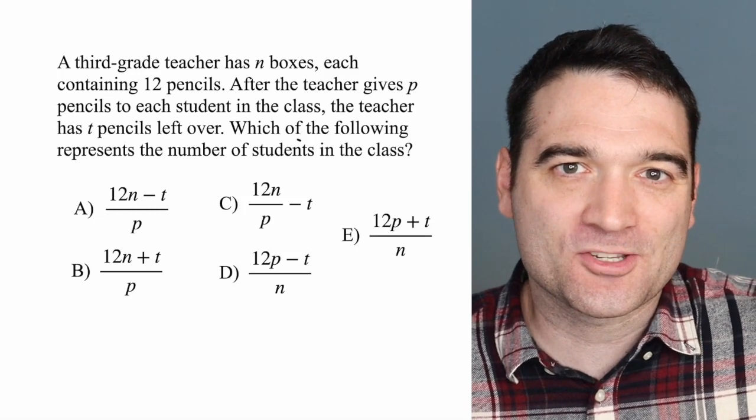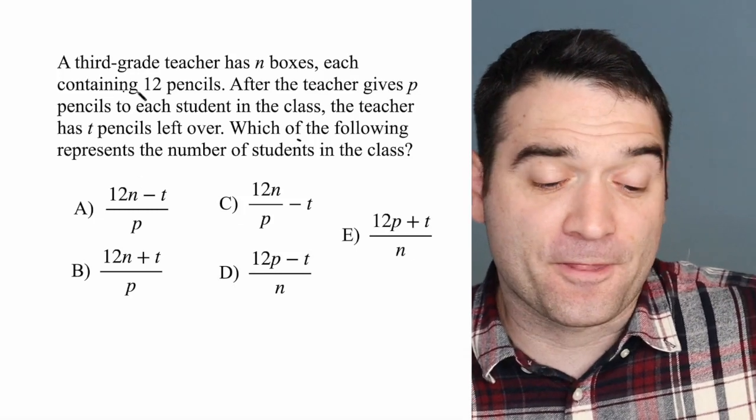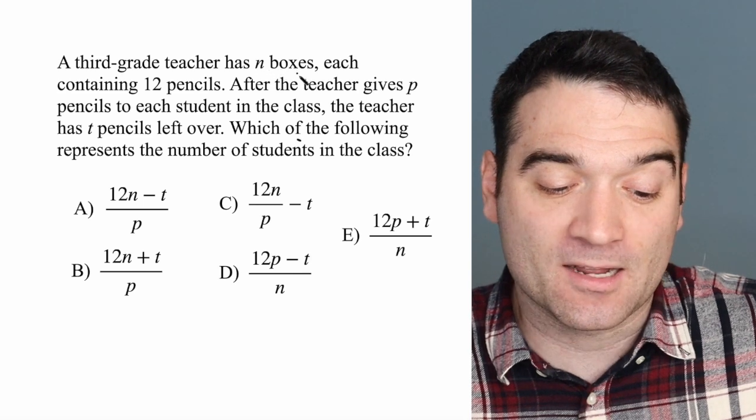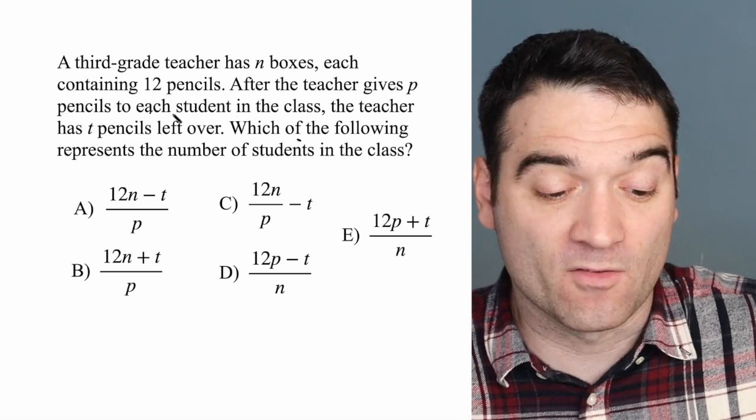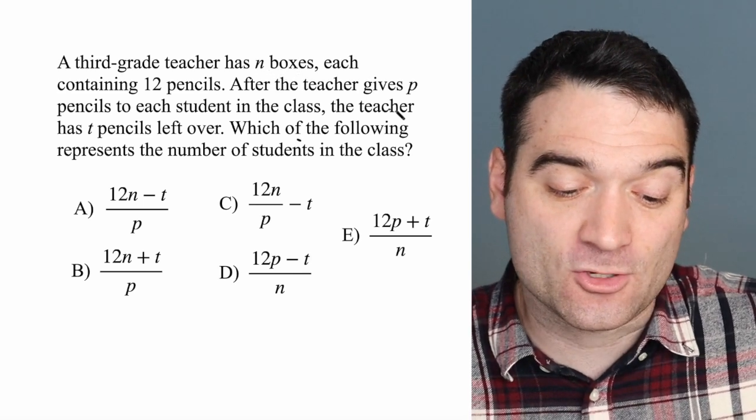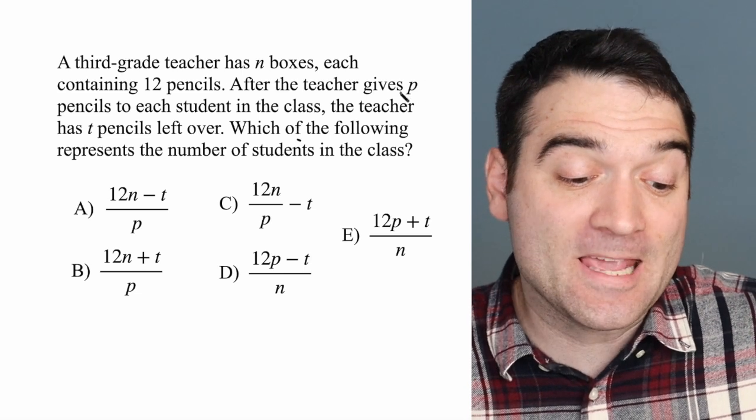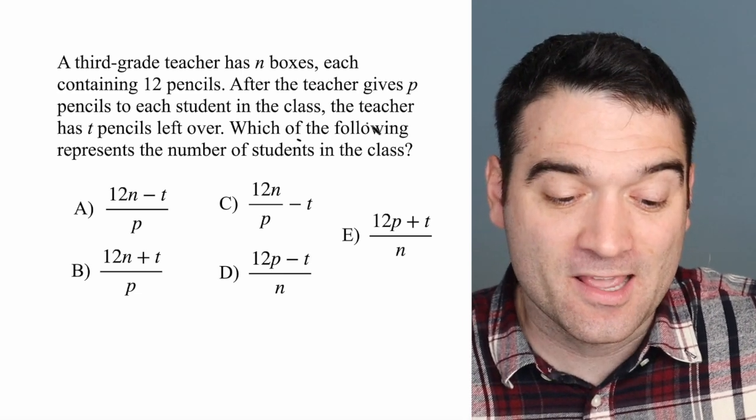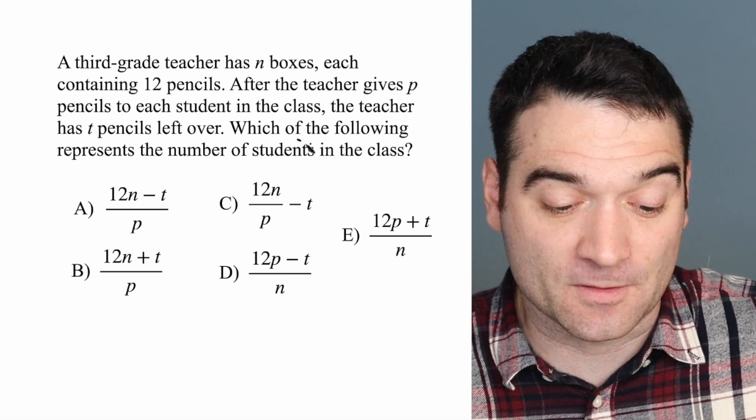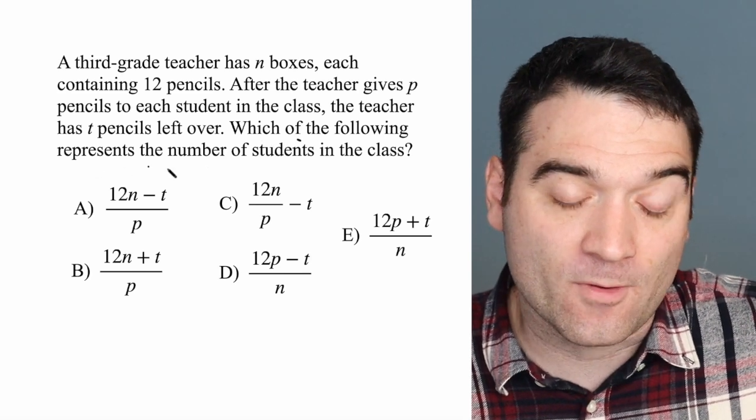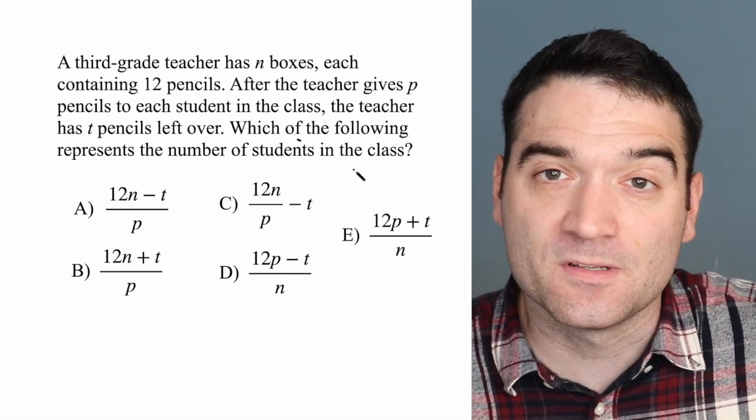Here's a GRE algebra question. Let's take a look. A third grade teacher has N boxes, each containing 12 pencils. After the teacher gives P pencils to each student in the class, the teacher has T pencils left over. Which of the following represents the number of students in the class?